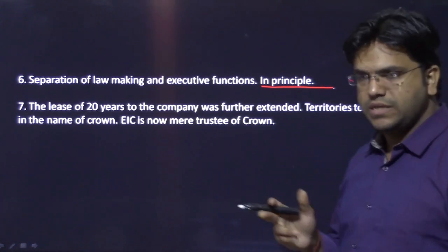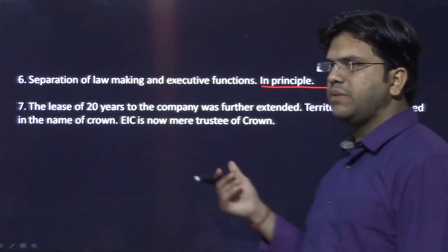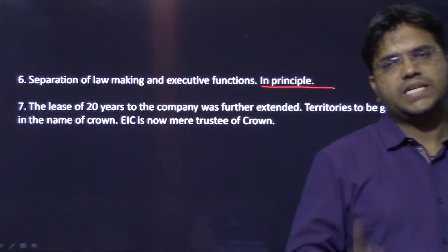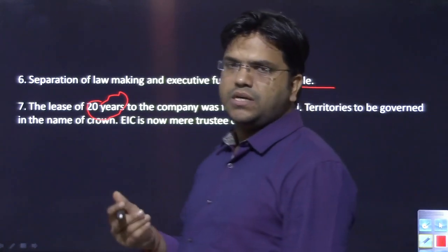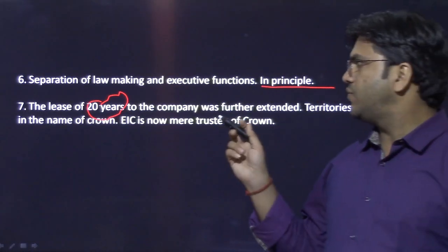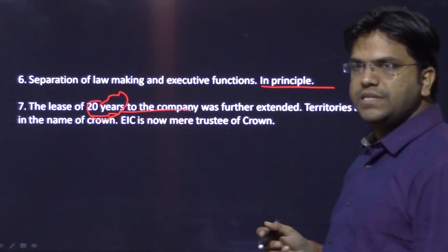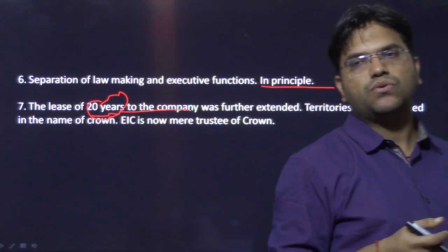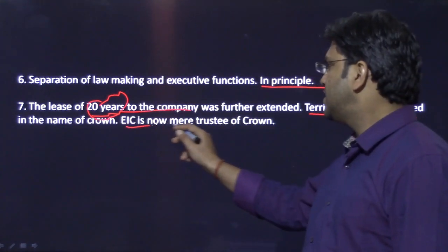The seventh provision was actually discussed first as the very reason this act came in 1833 — because the lease of the East India Company, given by the Monarch and Parliament, was expiring in 1833. So this act again extends the life of the East India Company as an administrative body in India for another 20 years. The next act you will see will be in 1853, where territories are to be governed in the name of the Crown and the EIC is now a mere trustee of the Crown.